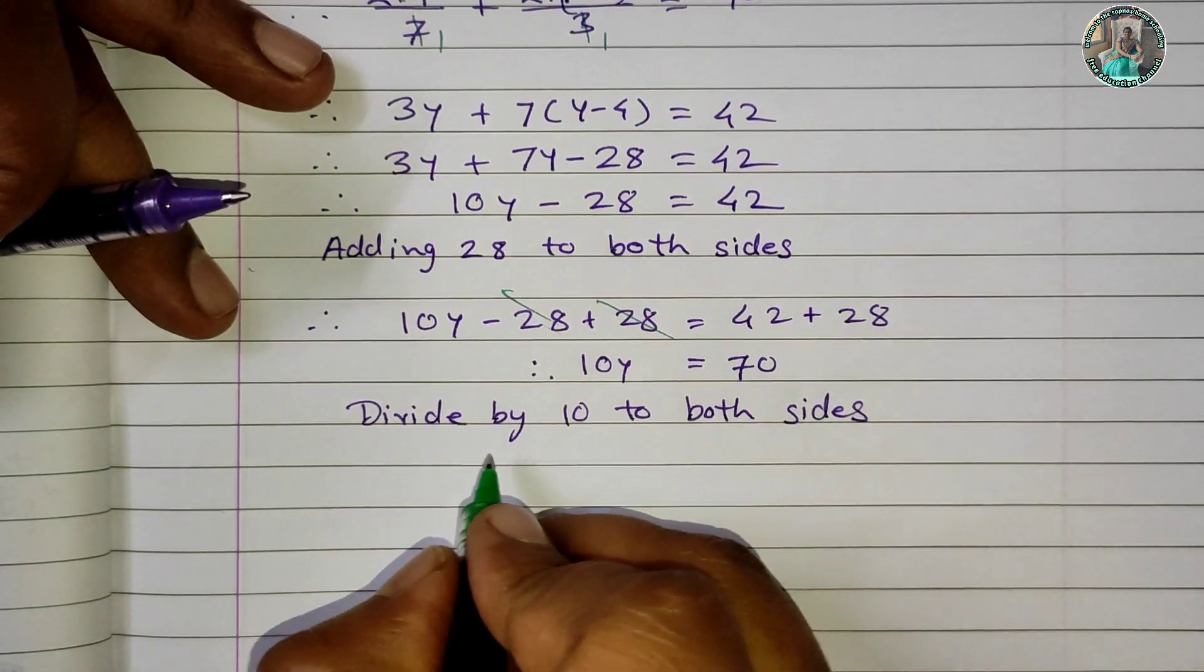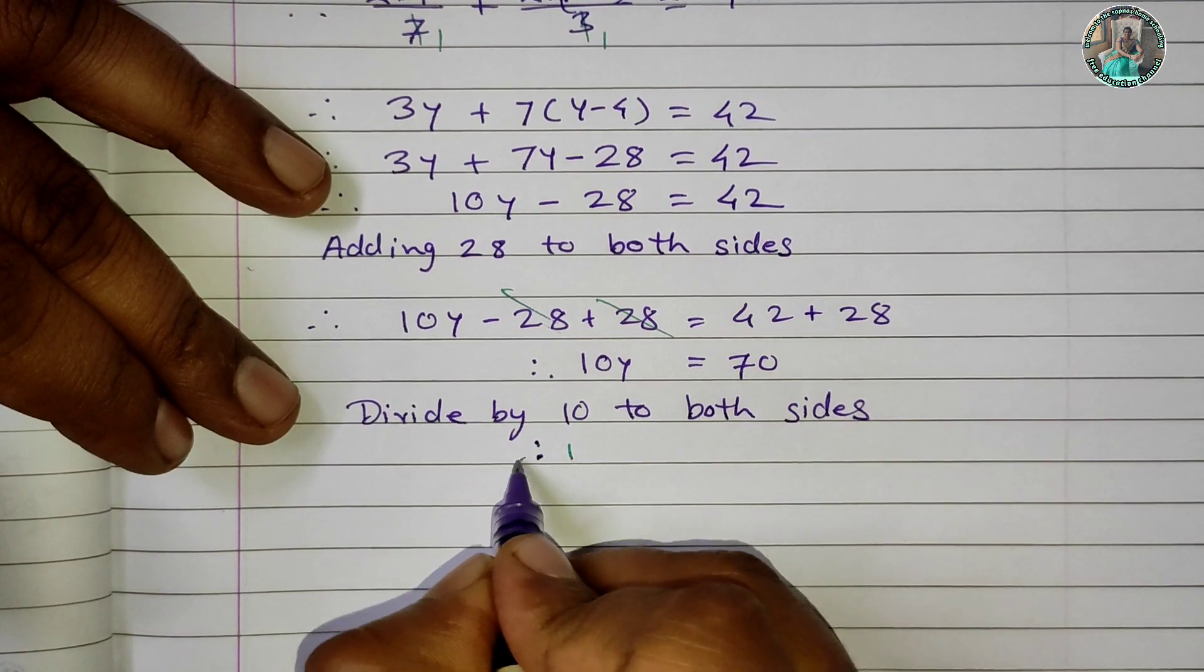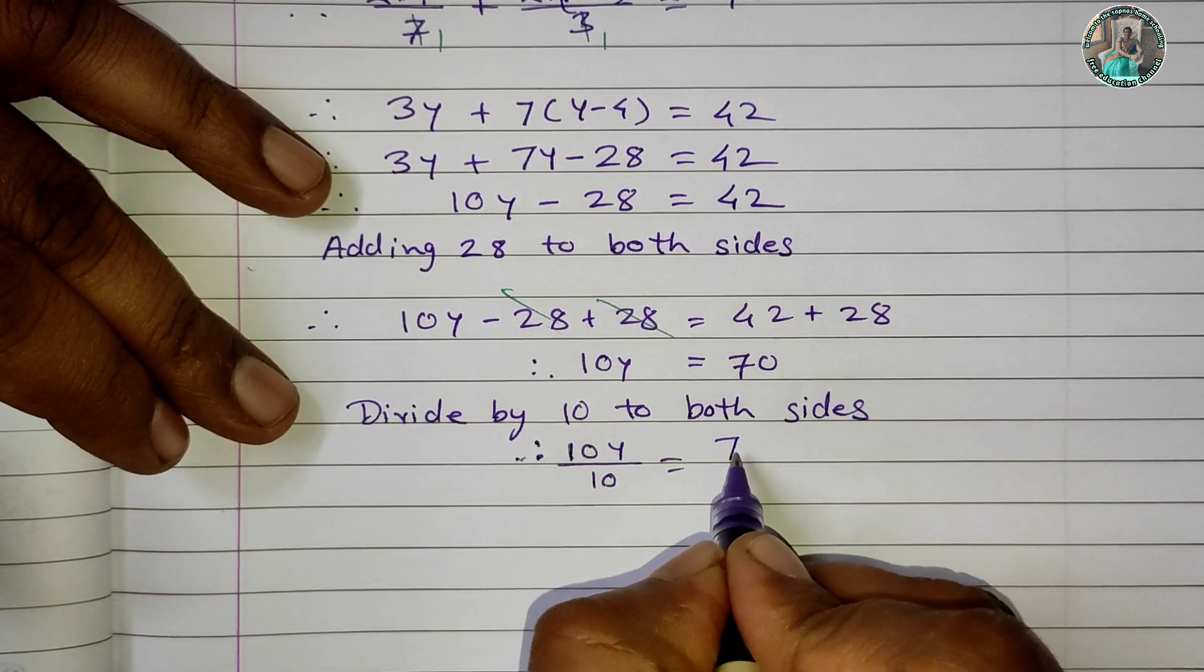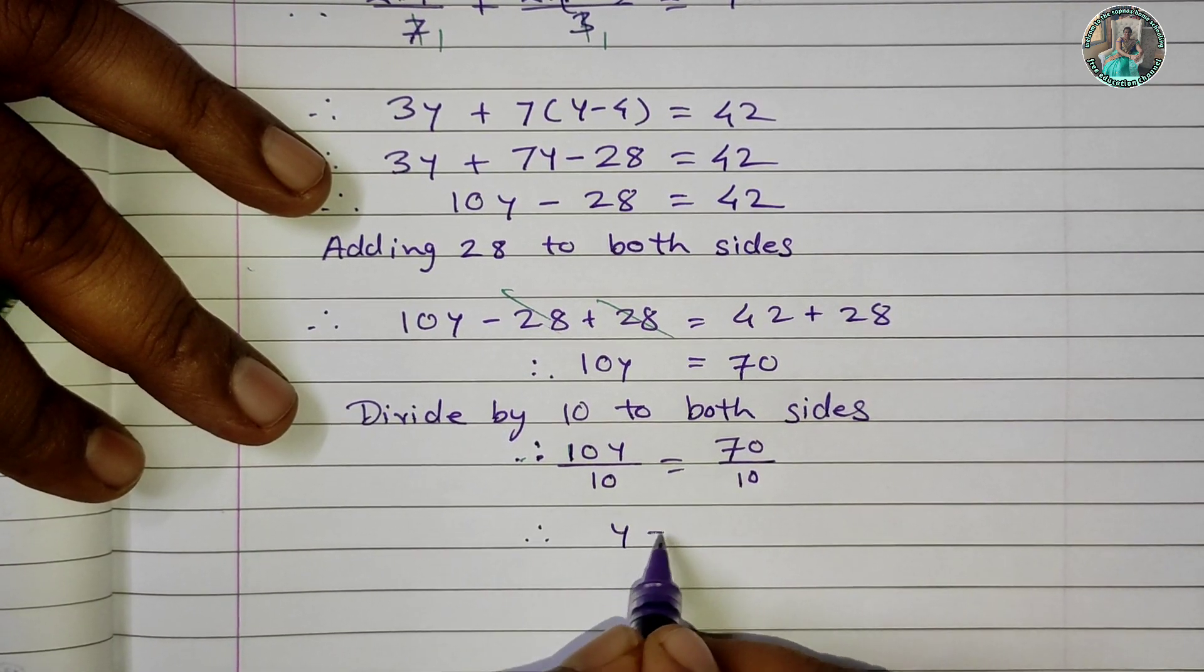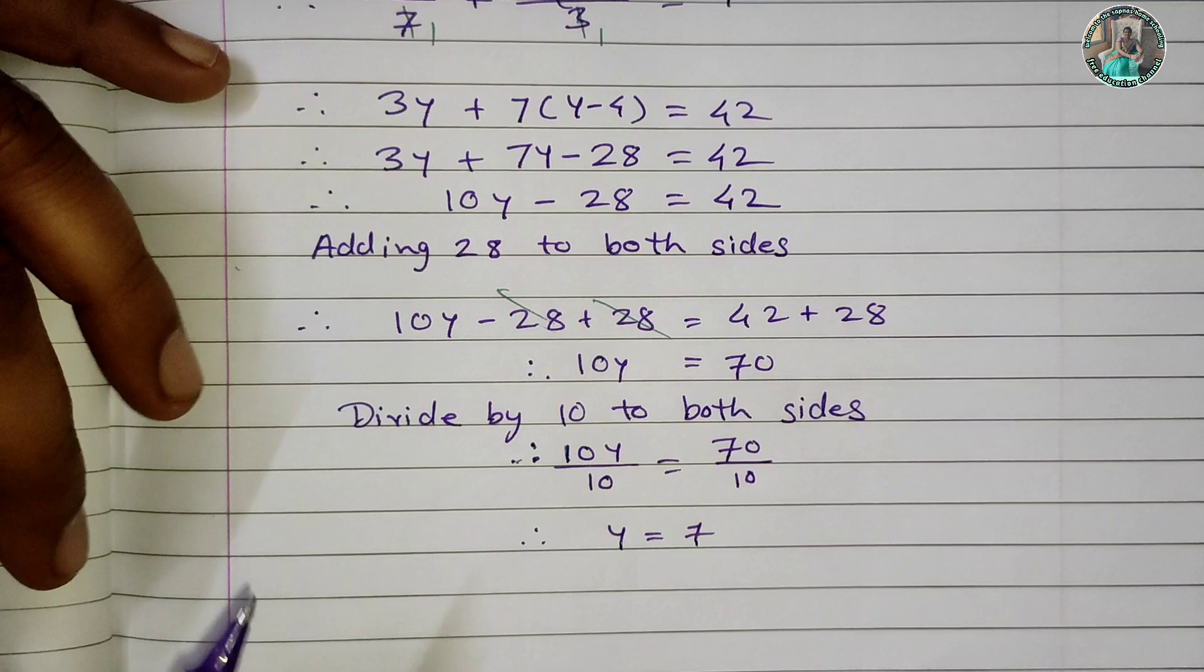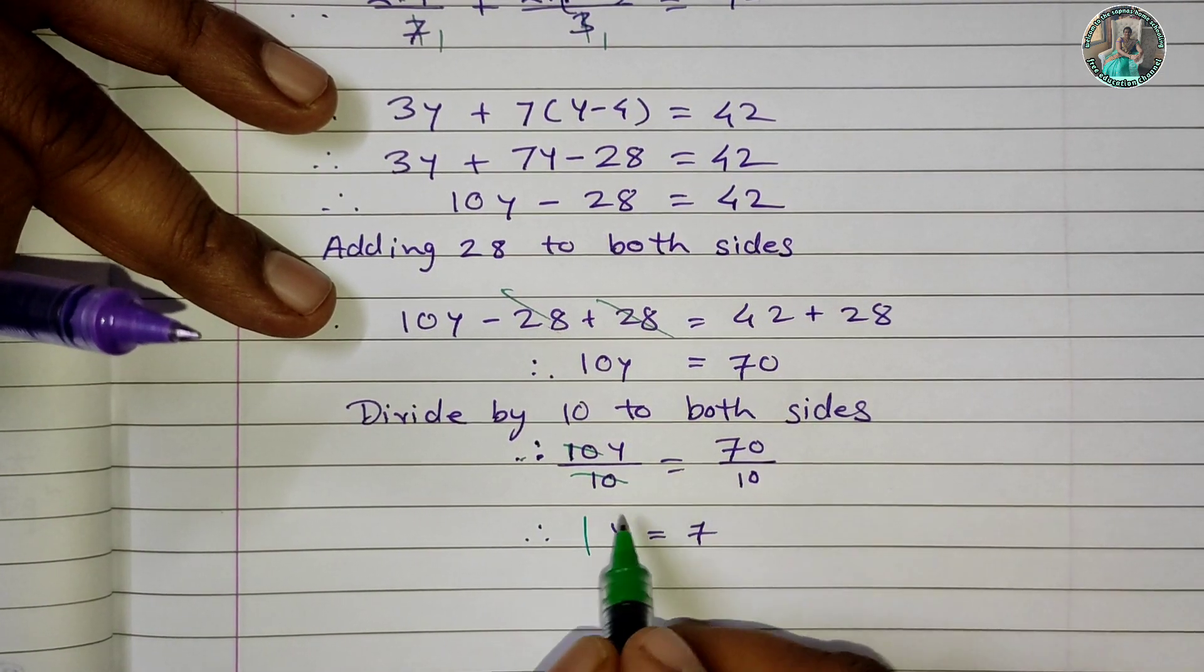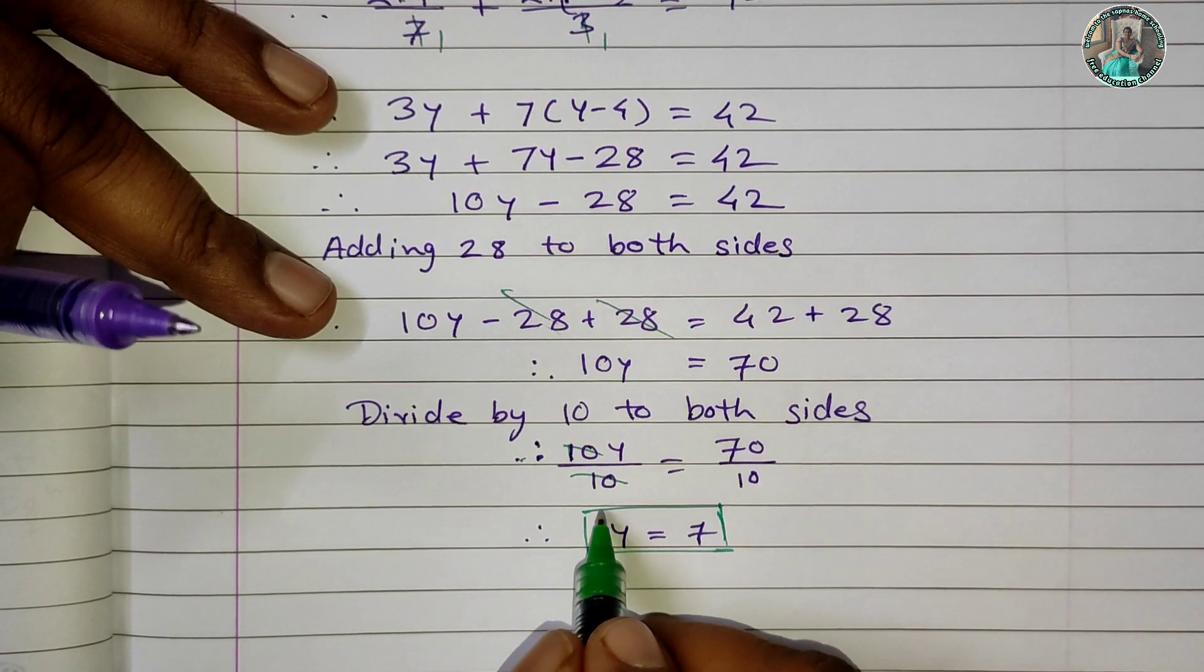Dividing by 10 to both sides: 10y/10 = 70/10. Therefore, y = 7. This is our solution.